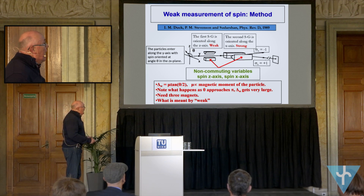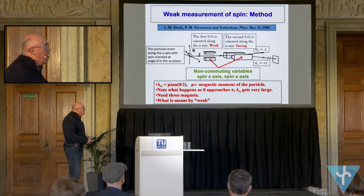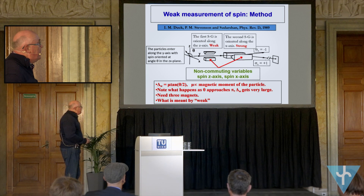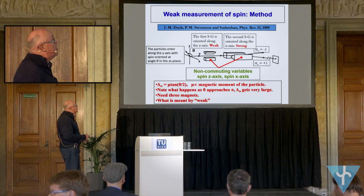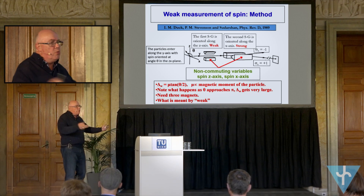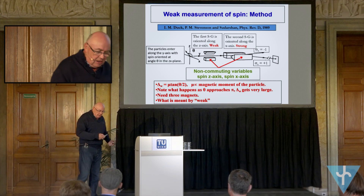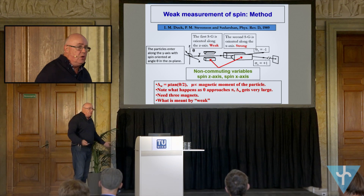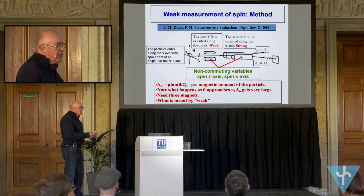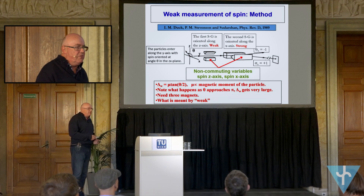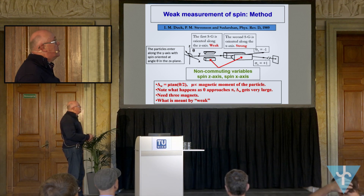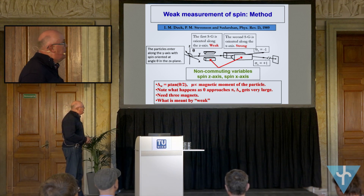As theta approaches pi, delta-w gets really large. From an experimental point of view, we need a minimum of three magnets: we need to split the spin, and we need the weak one and the strong one. We also actually have an overall magnetic field to deal with — we live in a magnetic field of about 4 Gauss — so we need to nullify that. That's something we have to do in atomic physics a lot: nullify the effects of the Earth's field.